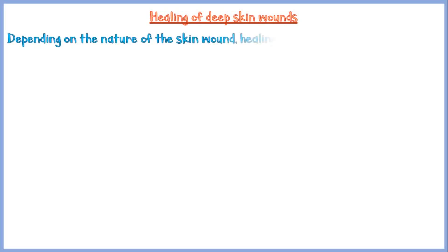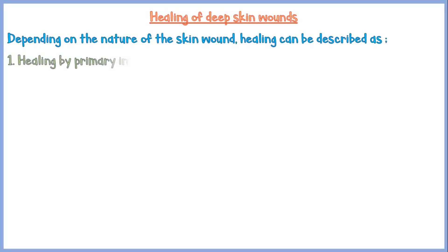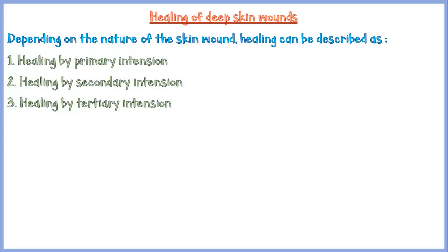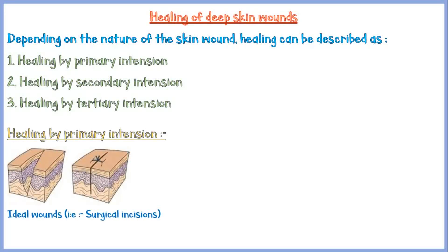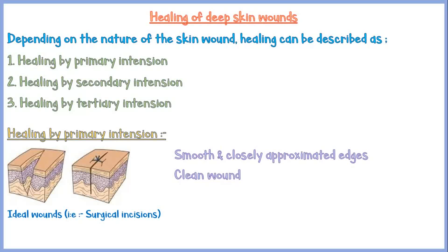Now let's discuss healing of deep skin wounds. Depending on the nature of the skin wound, healing can be categorized as healing by primary intention, healing by secondary intention, and healing by tertiary intention. Healing by primary intention occurs in ideal wounds such as surgical incisions. These wounds have smooth and closely approximated edges, are properly cleaned, and no infection, foreign material, or necrotic debris is present.